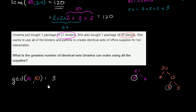This is essentially telling us: let's divide both of them. We can divide both of these numbers by 3, and that will give us the largest number of identical sets. So we've answered the question — it's 3. But just to visualize it for this question, let's actually draw 21 binders and 30 pencils.